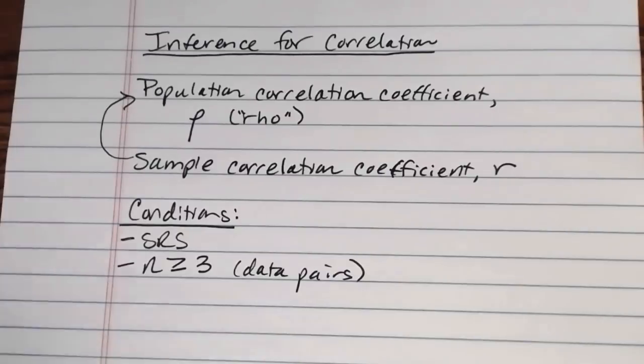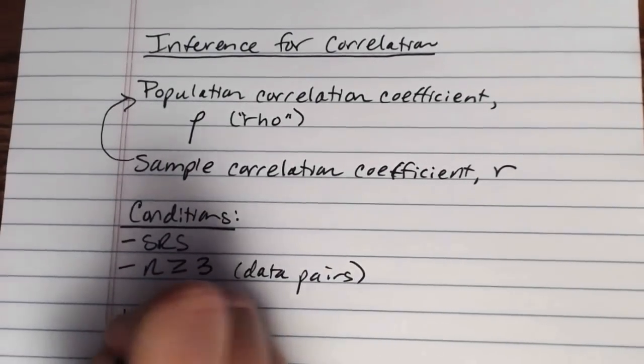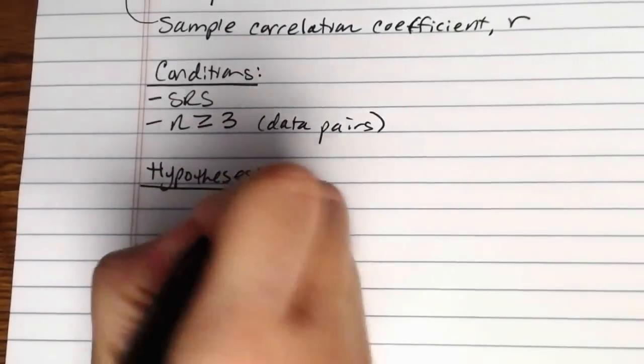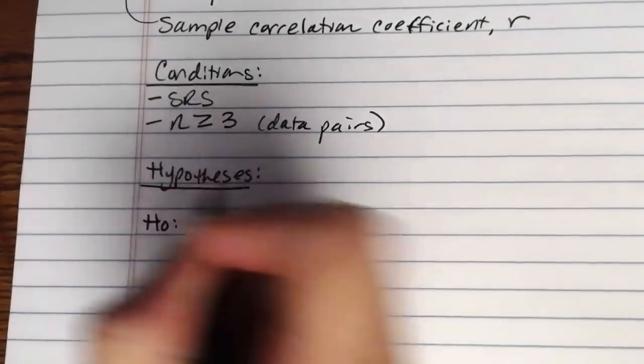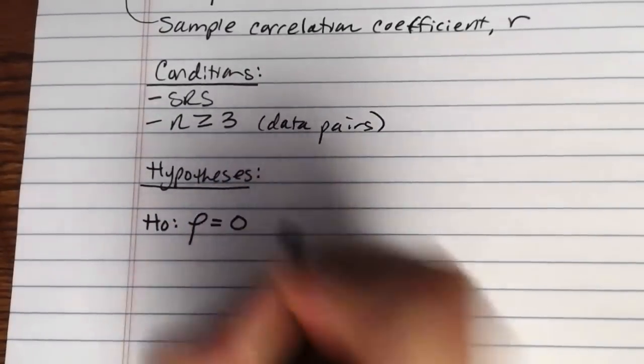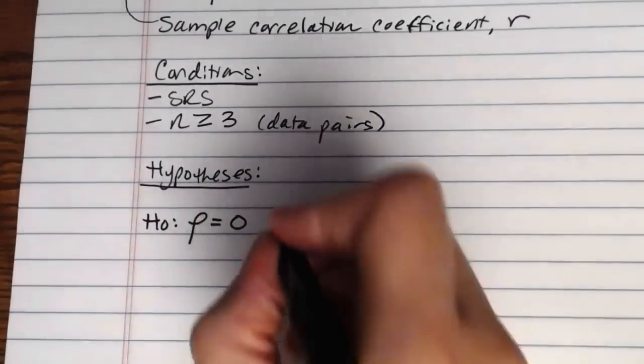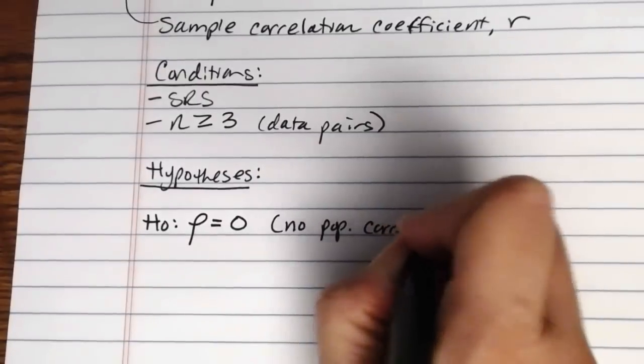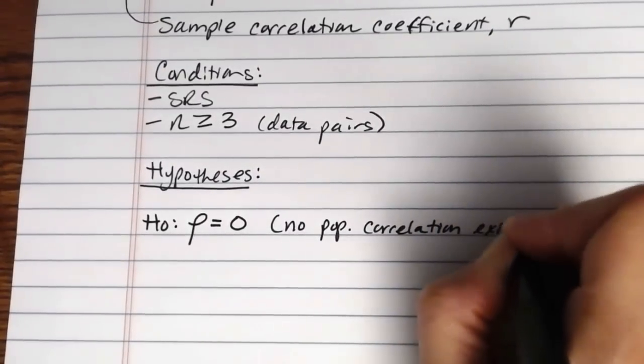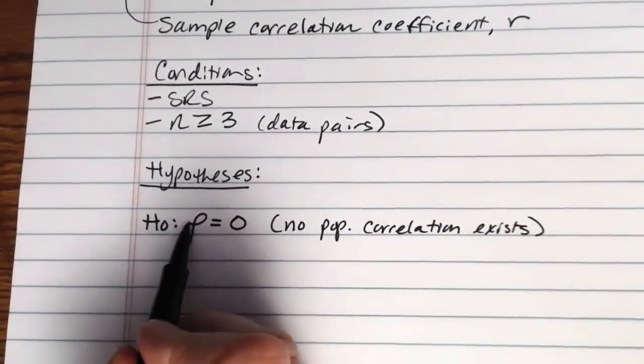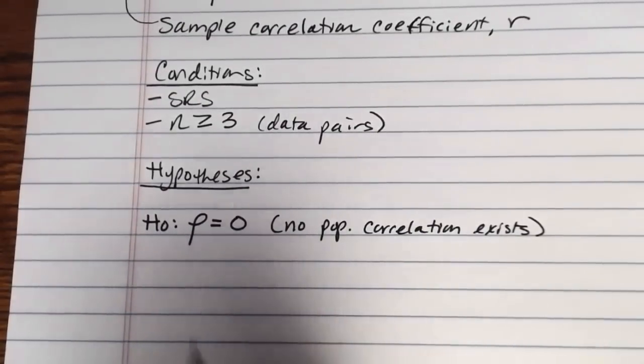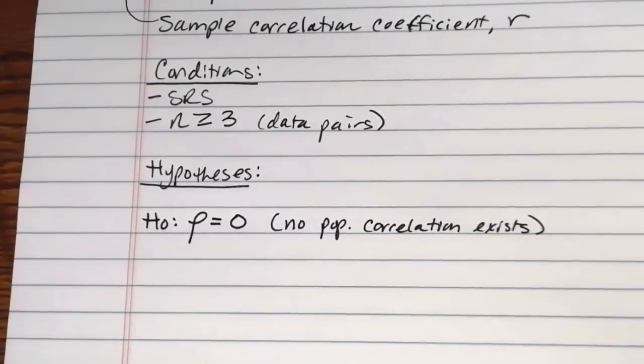Then the test, let's talk about hypotheses. The null hypothesis is going to be that rho is equal to zero. Or in other words, that no population correlation exists. If rho is a measurement of how correlated the two variables are in the larger population, we start with the assumption that unless we have data to the contrary, there's not a correlation between those two variables. They're unrelated.